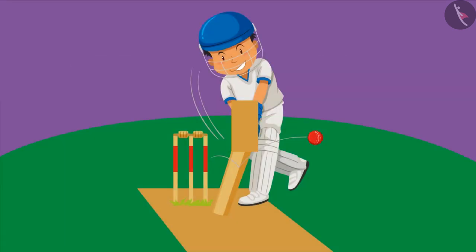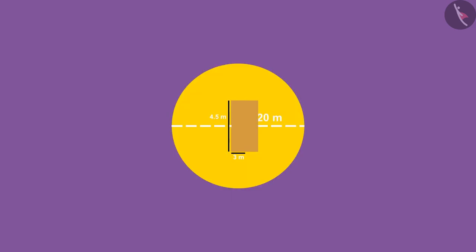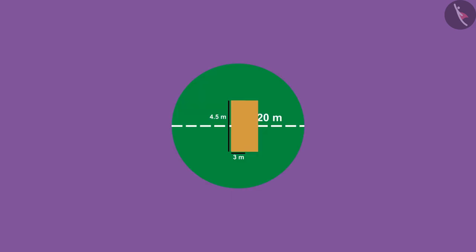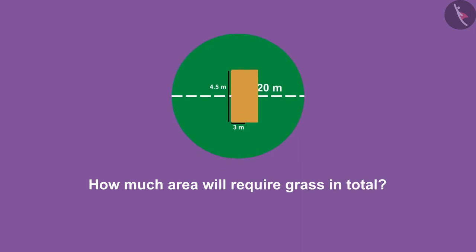Sohan wants to build a 20 meter diameter circular cricket ground. He wants to make a pitch inside the ground whose dimensions are 4.5 meters long and 3 meters wide. Sohan has to leave the pitch and plant grass all over the field, for which he wants to know how much area will require grass. So can you tell how much area will be covered by grass?